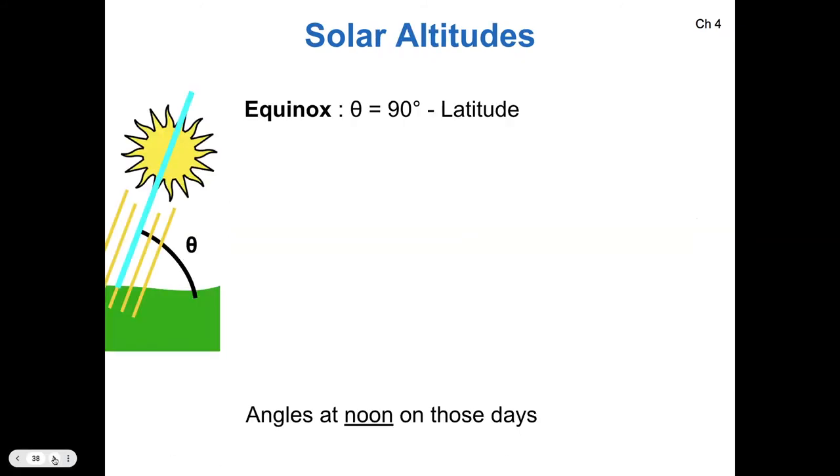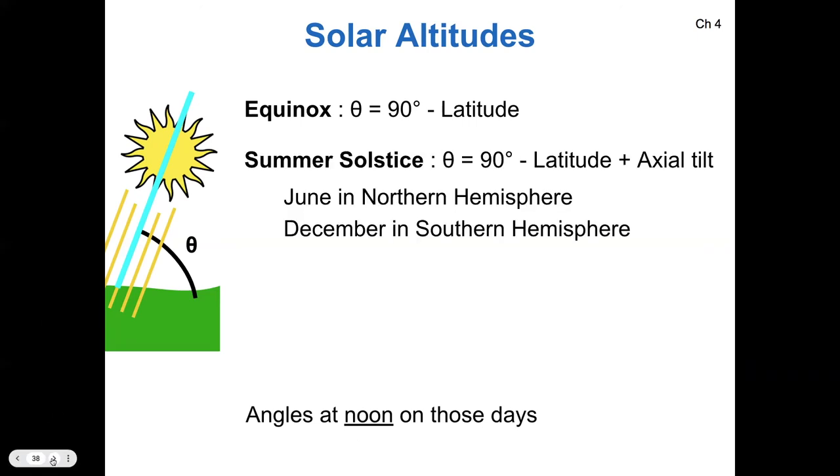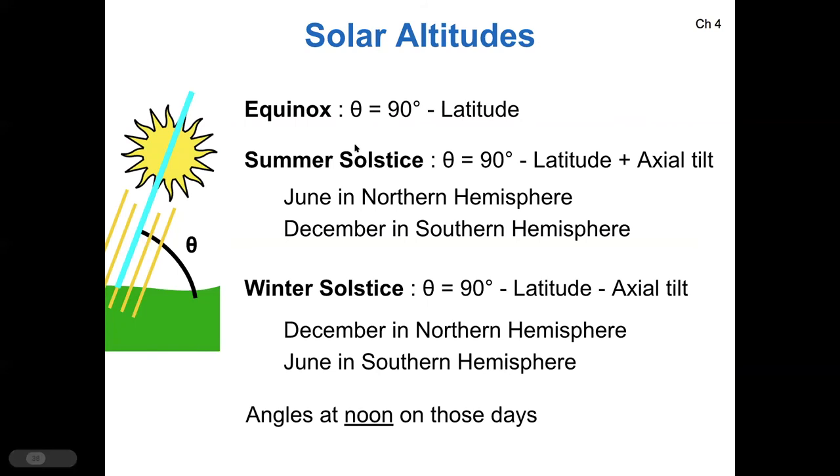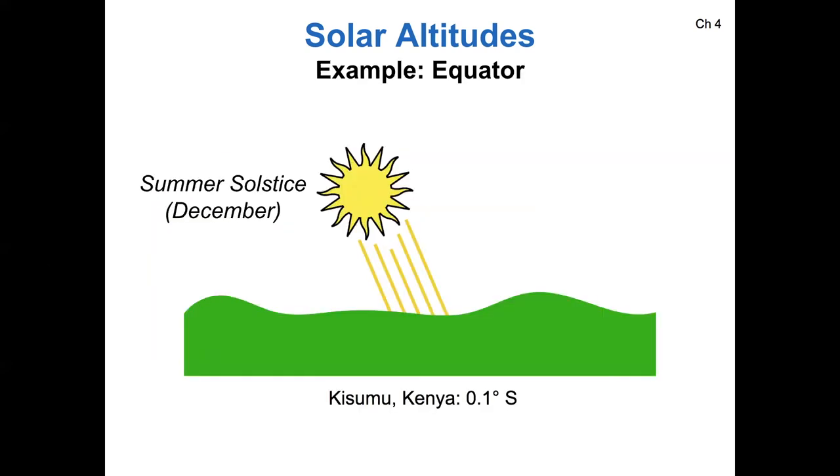If I put all of these together, the solar altitude angles, which are the angles measured at noon on those days when the sun is the farthest above the horizon. At equinox, it's just 90 minus your latitude. In the summer solstice for your given hemisphere, so June in the north, December in the south, it's 90 minus latitude plus tilt. And then winter, it's 90 minus latitude minus tilt.